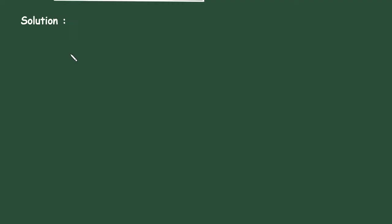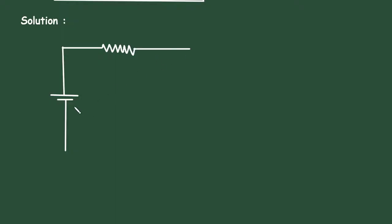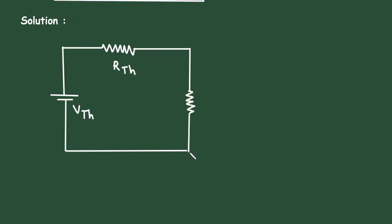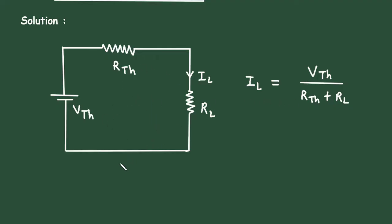Solution. First of all, we will see what is Thevenin's theorem. Thevenin's theorem states that a linear two-terminal circuit can be replaced by an equivalent circuit consisting of a voltage source Vth in series with a resistor Rth, where Vth is the open circuit voltage at the terminals and Rth is the equivalent resistance at the terminals when all the independent sources are turned off. This is the load resistor RL, and the load current IL. We can easily find the value of IL: IL is equal to Vth divided by Rth plus RL. And this circuit is called Thevenin's equivalent circuit.